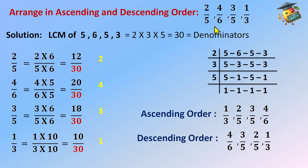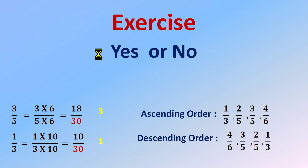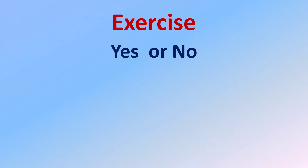So we've done ascending and descending order for unlike fractions where denominators and numerators are different. The key rule: find LCM of denominators, make equivalent fractions with that denominator, then order using the numerators. Write your final answer using the original fractions from the question, not the equivalent ones.